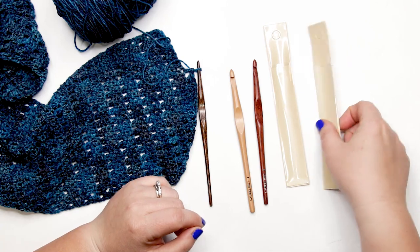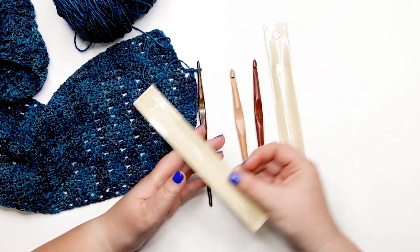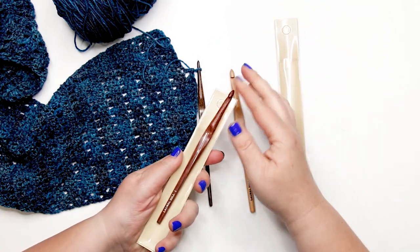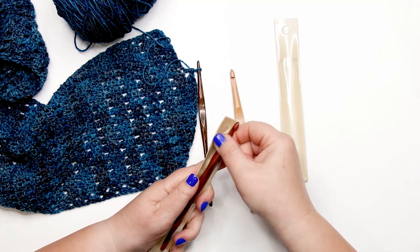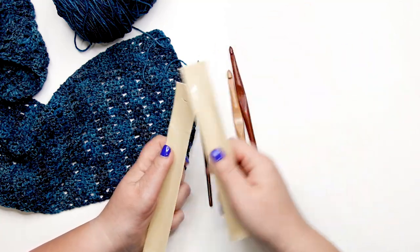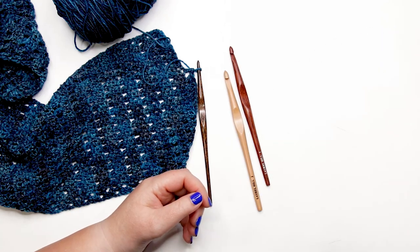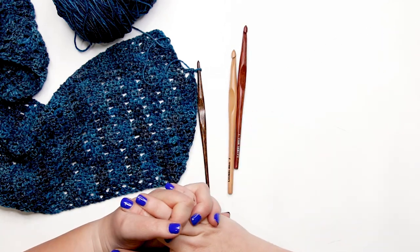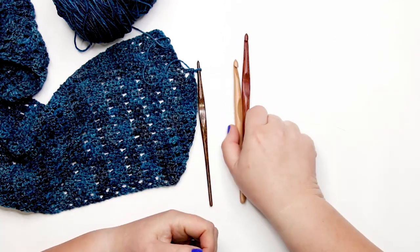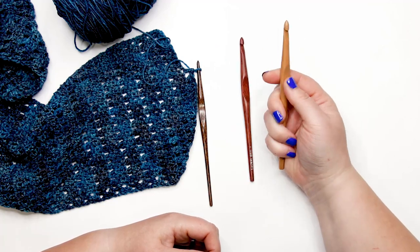When they're shipped to you, they're shipped in these little sleeves, and they're handy if you need to throw your crochet hook in your purse. The hooks themselves are quite light; they weigh almost nothing in your hand.